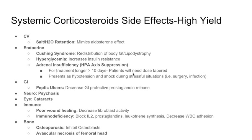Adrenal insufficiency occurs with treatment longer than 10 days, so patients need their dose tapered — for example, from 50mg down to 40, then 30, gradually. This presents as hypotension and shock during stressful situations such as surgery or infection. A common test question will tell you a patient is on prednisone for rheumatoid arthritis or lupus, then presents with a blood pressure of 70/40 — the cause would be adrenal insufficiency.